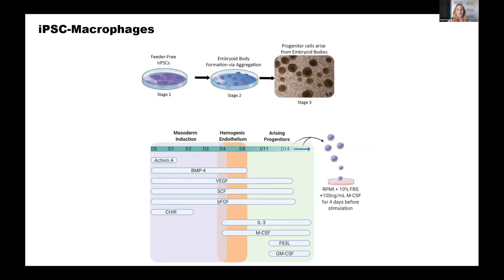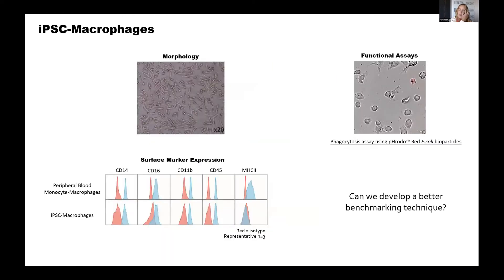When thinking about making macrophages from pluripotent stem cells, there are now a large number of methods describing this process. Essentially the process involves adding various proteins or instructions to your stem cells to encourage lineage development, ultimately giving rise to myeloprogenitors which you can collect and further differentiate into macrophage-like cells in the presence of M-CSF or CSF1 for a few days. The benchmarking of these cells relies on morphology — as you can see in this in vitro culture image showing the beautiful morphology of macrophages — as well as surface marker expression assessed by flow cytometry.